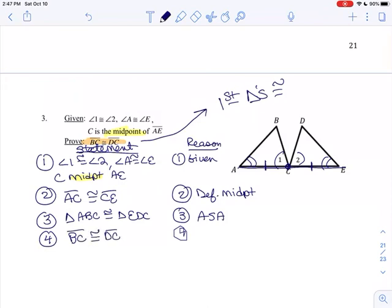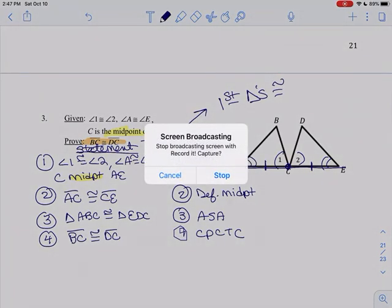Once the triangles are congruent, the rest of the corresponding parts are congruent. So BC is congruent to DC, and that reason is CPCTC. Corresponding parts of congruent triangles are congruent. Okay, so that's it for today. We were done with our last lesson in this show.